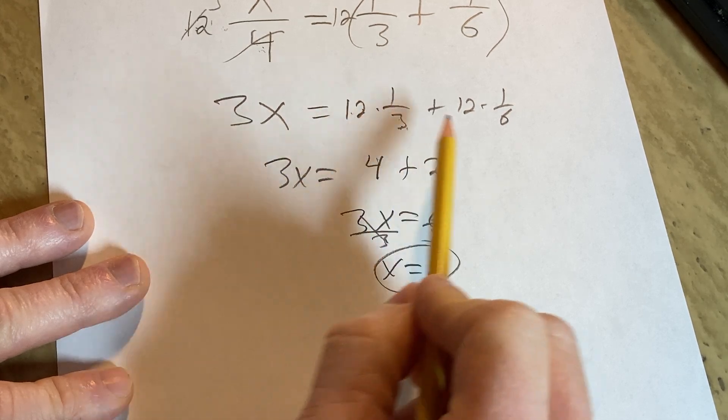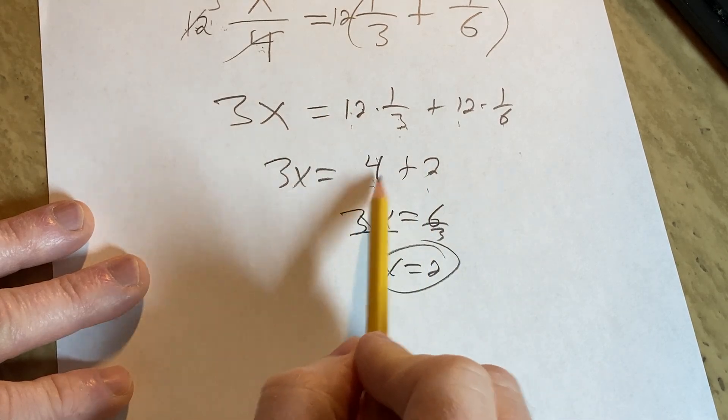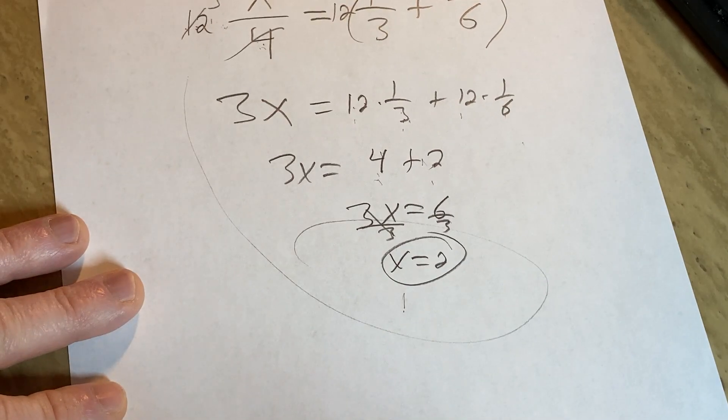3 goes into 12 four times. 6 goes into 12 two times. 12 over 6 is 2. 12 over 3 is 4. 4 plus 2 is 6. And then you just go from there and you got it. I hope it's been helpful. Good luck.